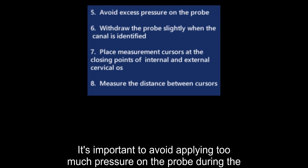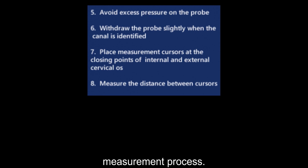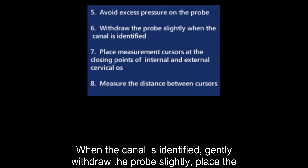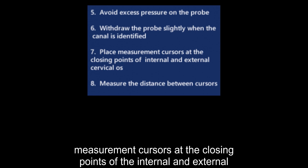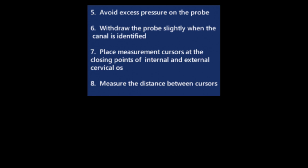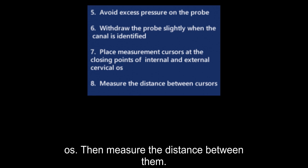It's important to avoid applying too much pressure on the probe during the measurement process. When the canal is identified, gently withdraw the probe slightly. Place the measurement cursors at the closing points of the internal and external os, then measure the distance between them.